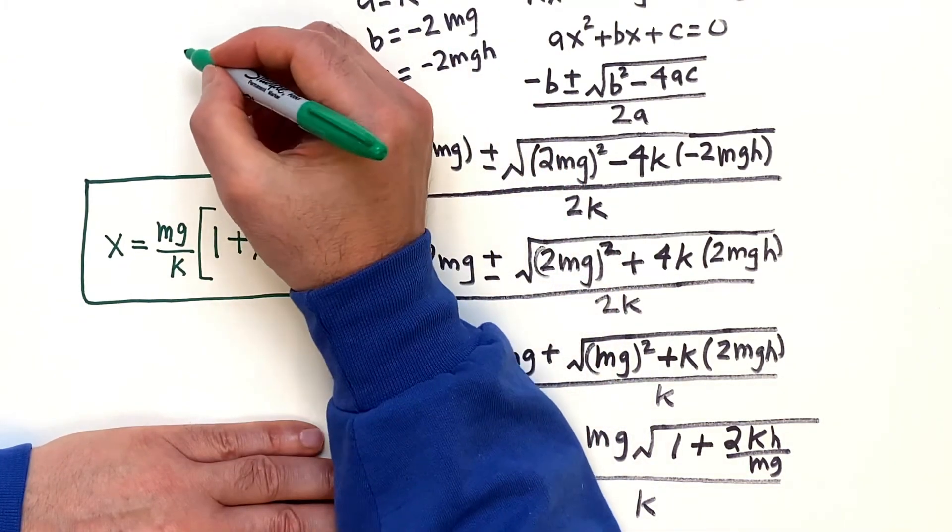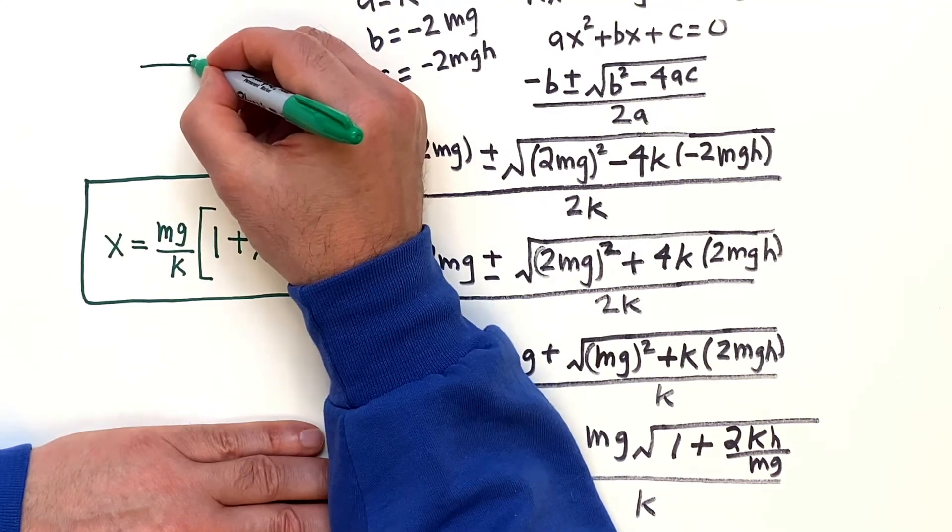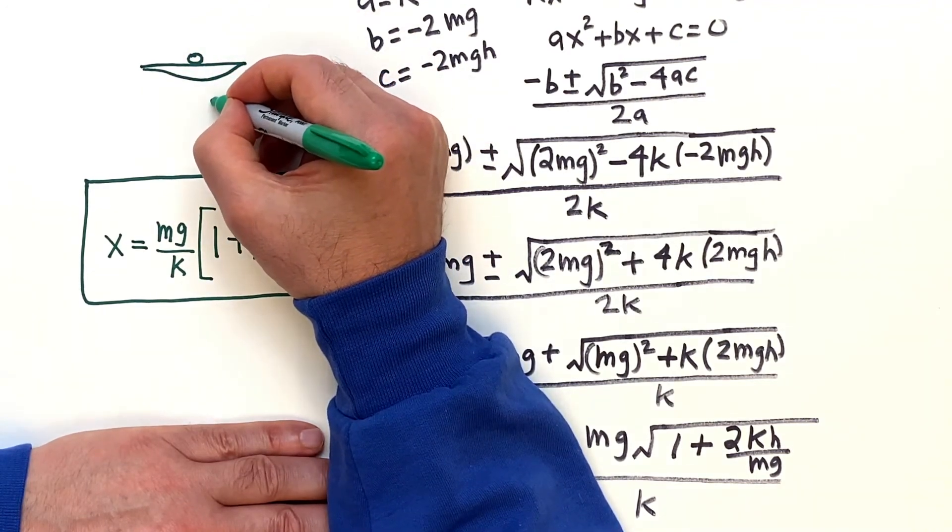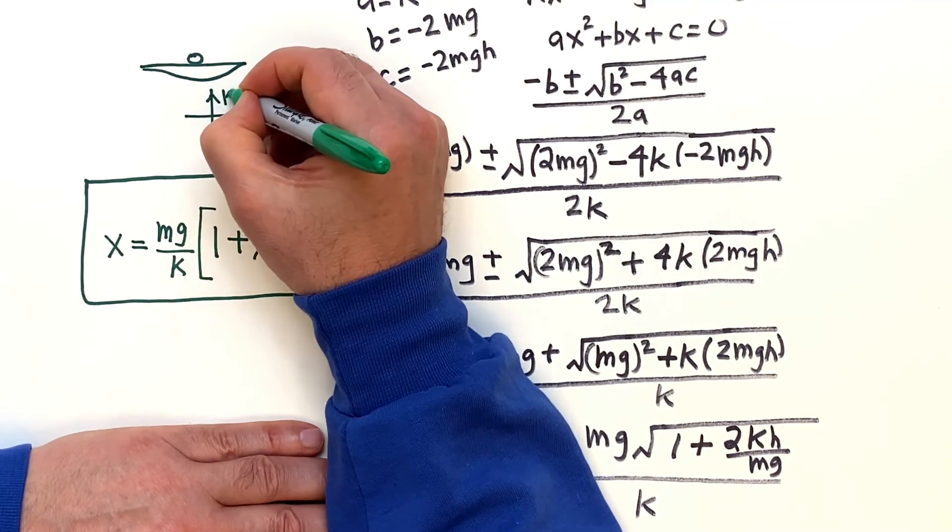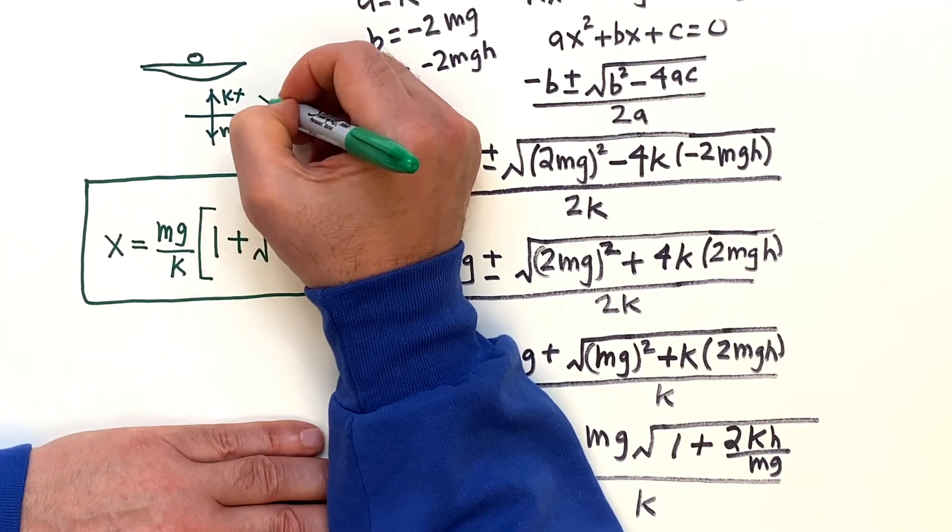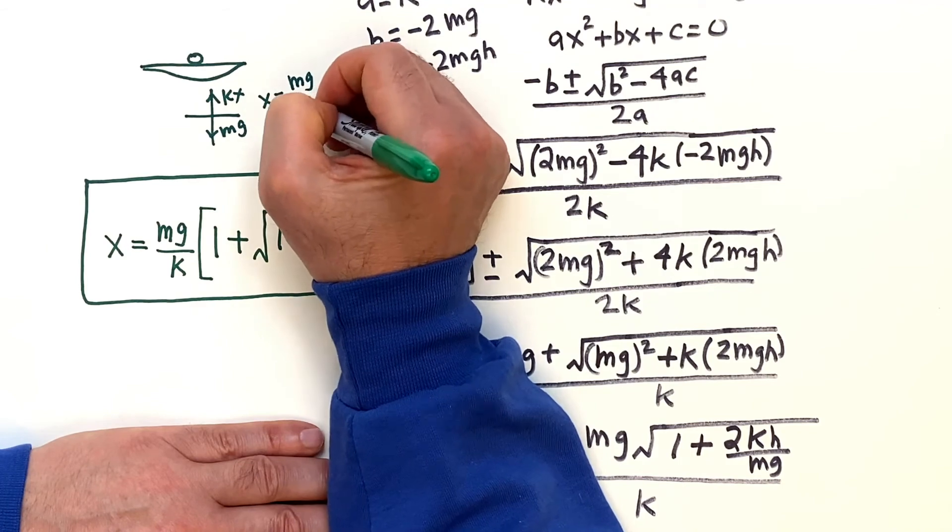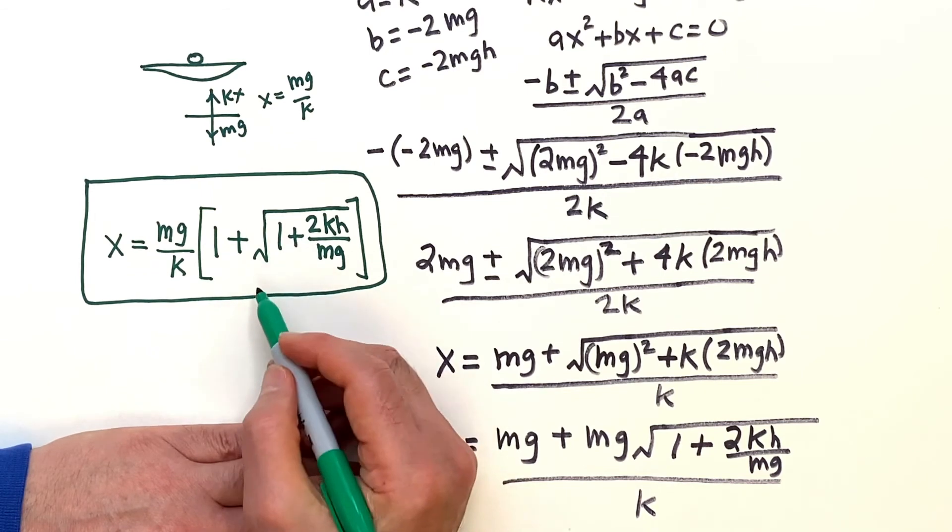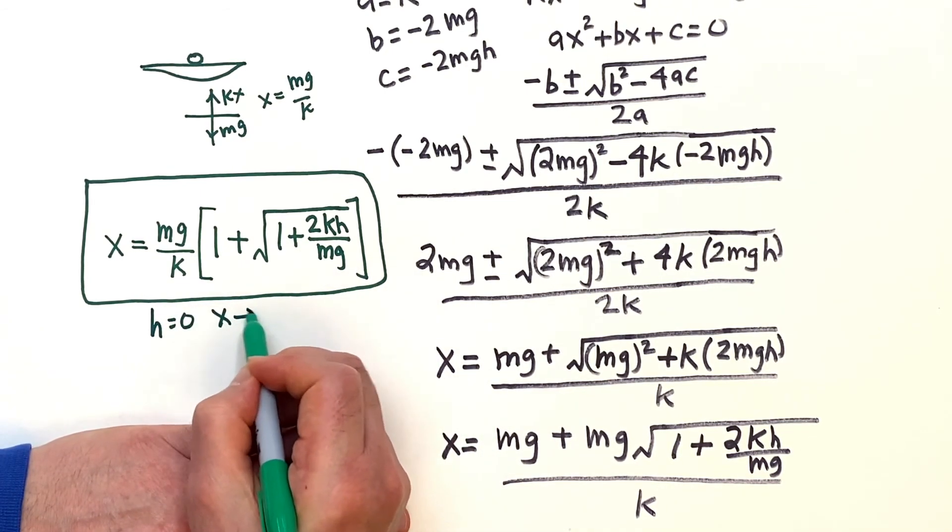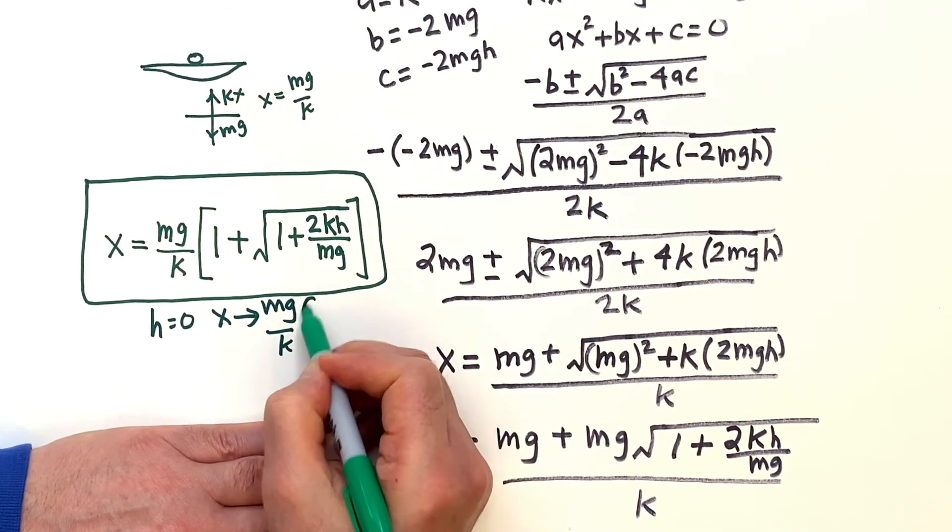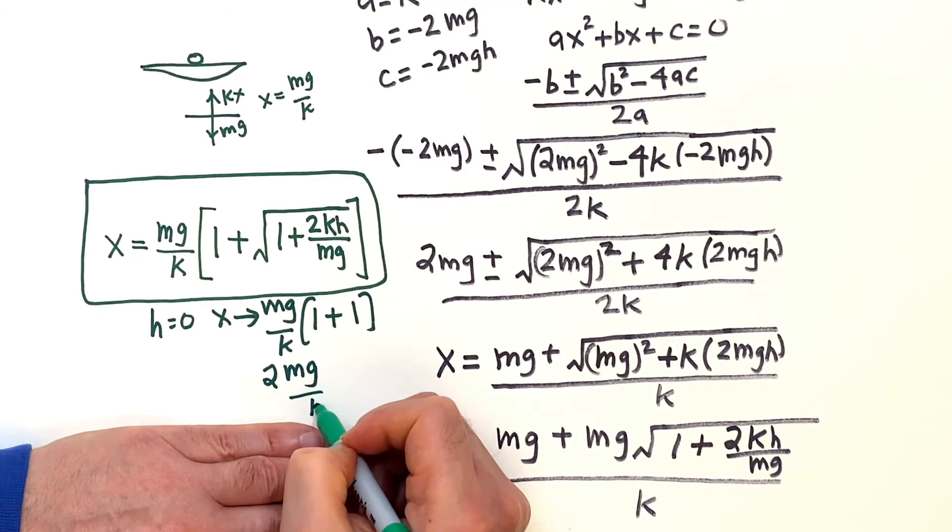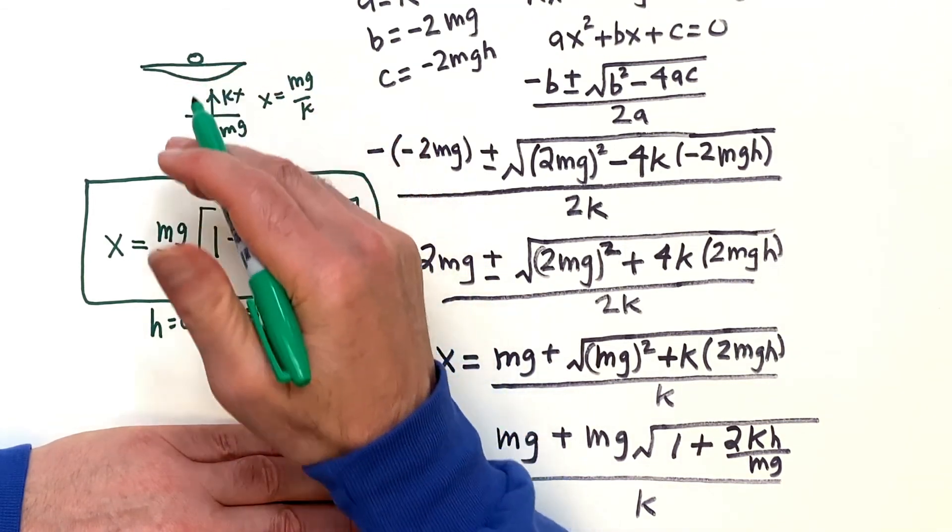Notice that when h is 0, in other words, suppose you put someone here and then let them fall to get a little distance. You might think that in that case, you would want to have kx and mg balanced. You would expect to have mg over k, but here, when h is 0, you don't get that. You get, when h is equal to 0, the x becomes mg over k, 1 plus, that part is 0, but then you have another 1. You actually get 2 mg over k. Why is that?